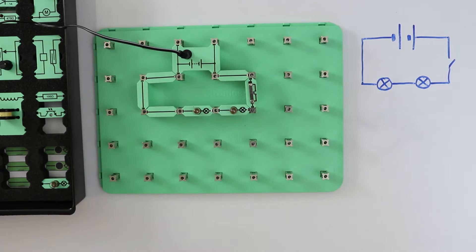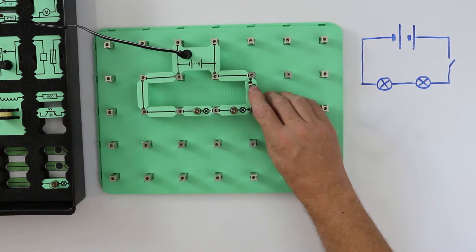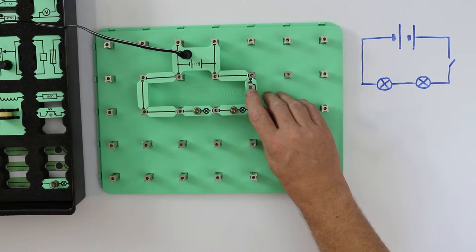Everything is connected up in one line after the other. There is only one way for the electricity to flow around. There are no junctions and more importantly no alternative routes.